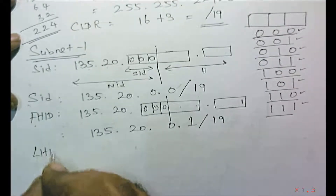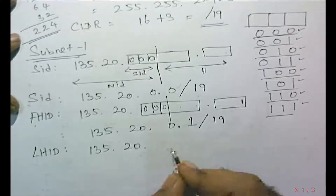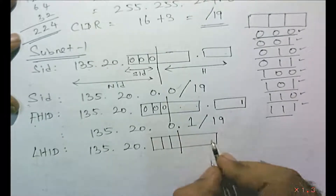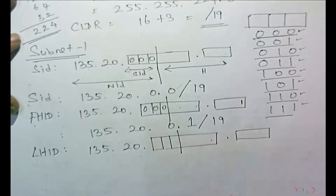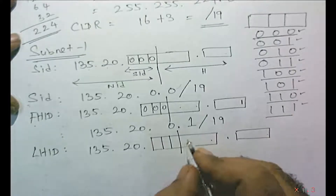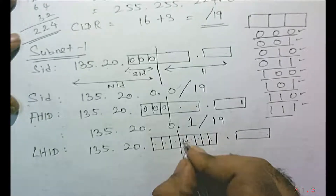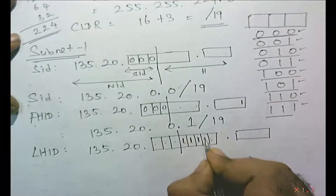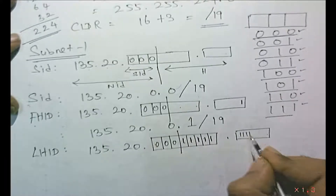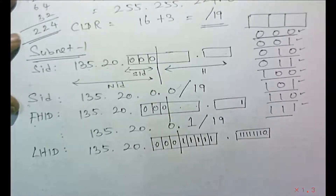The last host ID for subnet 1: the formula is to make everything 1 in the host part except the last bit, which stays 0. We have 3 borrowed bits then 5 bits available in the third octet, and 8 bits in the fourth octet. All 5 bits in the third octet become 1, and all 7 remaining bits in the fourth octet become 1, with the last bit 0. The place values are 1, 2, 4, 8, 16, giving 31 for the third octet portion, and the fourth octet calculates to 254.